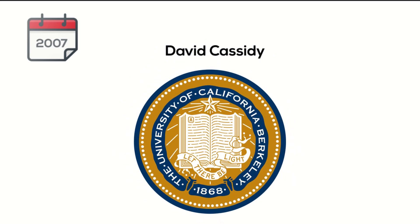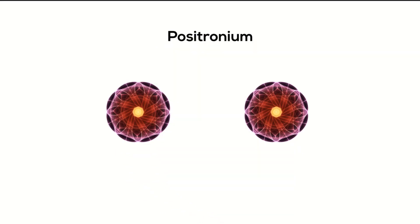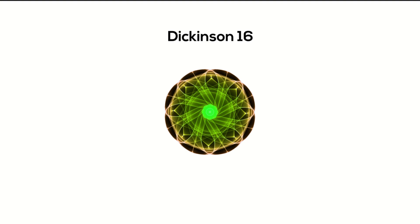In 2007, David Cassidy from the University of California was able to take two positronium atoms, each one consisting of an electron and a positron, and combine them into an anti-molecule, dipositronium. Of course, the molecule was short-lived as the electron and positron annihilated each other.